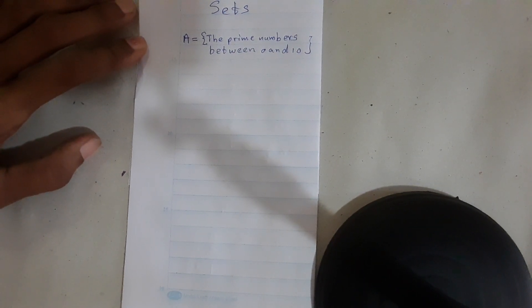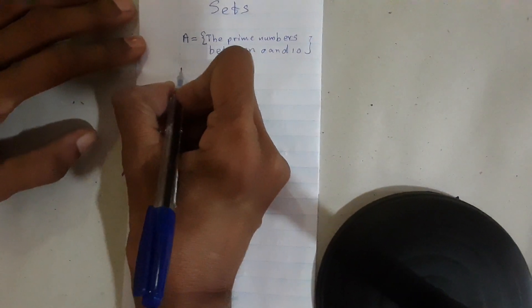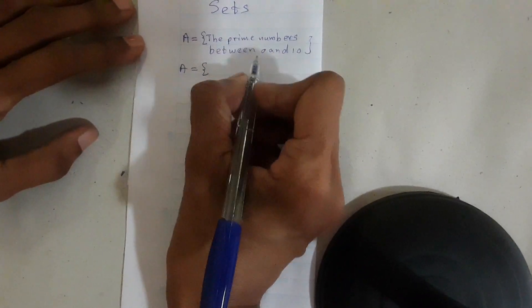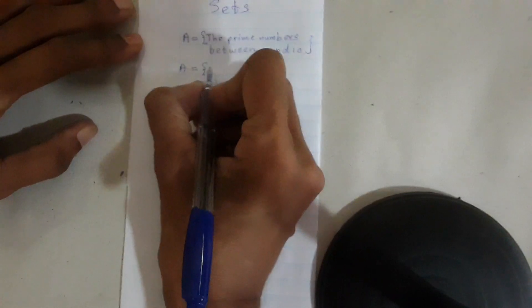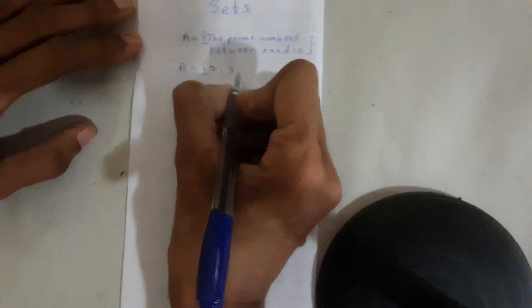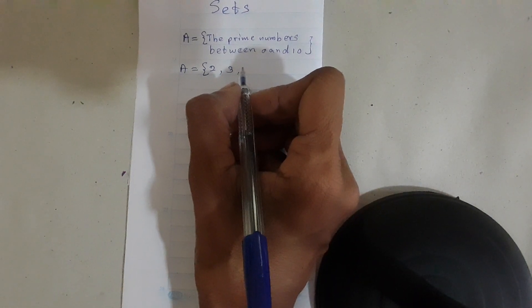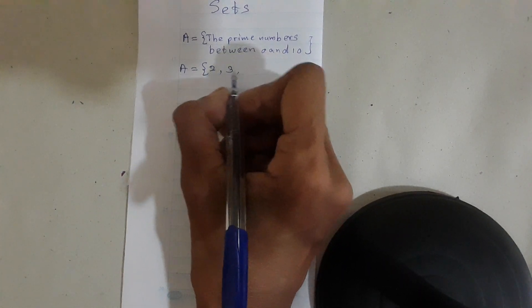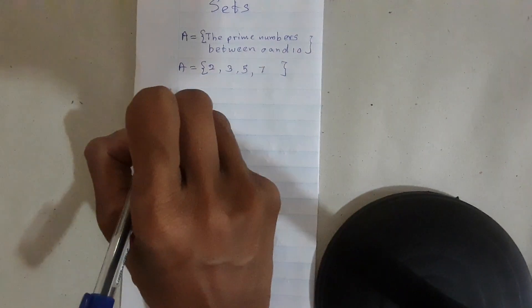Second method: write the elements within curly brackets. Elements of this set, prime numbers between 0 and 10: Is one a prime number? No. Two, three. Four is not a prime number; four is divisible by 2. Prime numbers are divisible by 1 and itself. Five, seven.